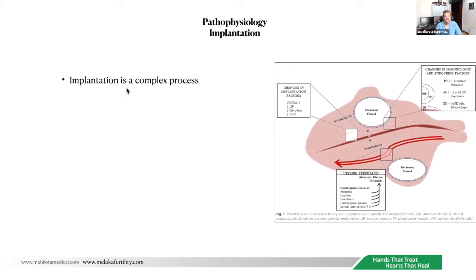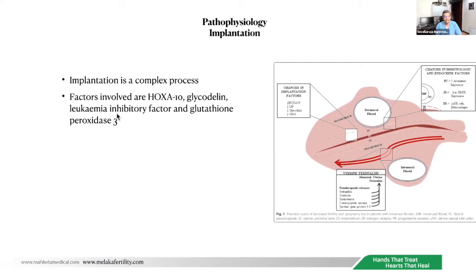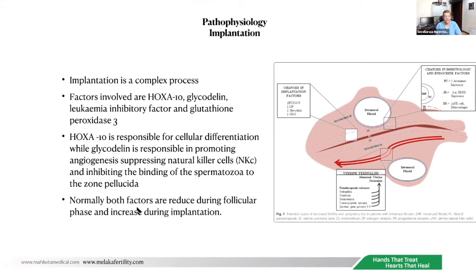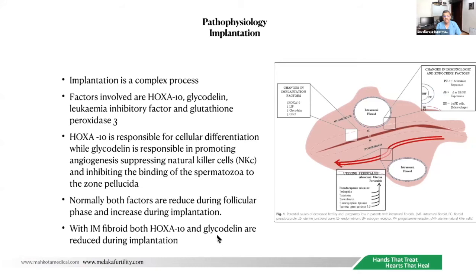Let's look at implantation — a complex process. Even in IVF we can create a beautiful embryo that doesn't implant. Factors involved include Hoxa-9, Hoxa-10, glycodilin, leukemia inhibitory factor, and glutathione peroxidase 3. Hoxa-10 is responsible for cellular differentiation, while glycodilin promotes angiogenesis, suppresses natural killer cells, and inhibits binding of spermatozoa to the zona pellucida. In patients with intramural fibroids, both Hoxa-10 and glycodilin are reduced during implantation, which may explain why these patients fail to conceive.